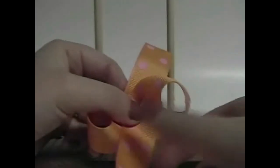Take the bow off of the bow maker. You can shape those loops a little bit more if you want. Make them a little bit rounder and more full.